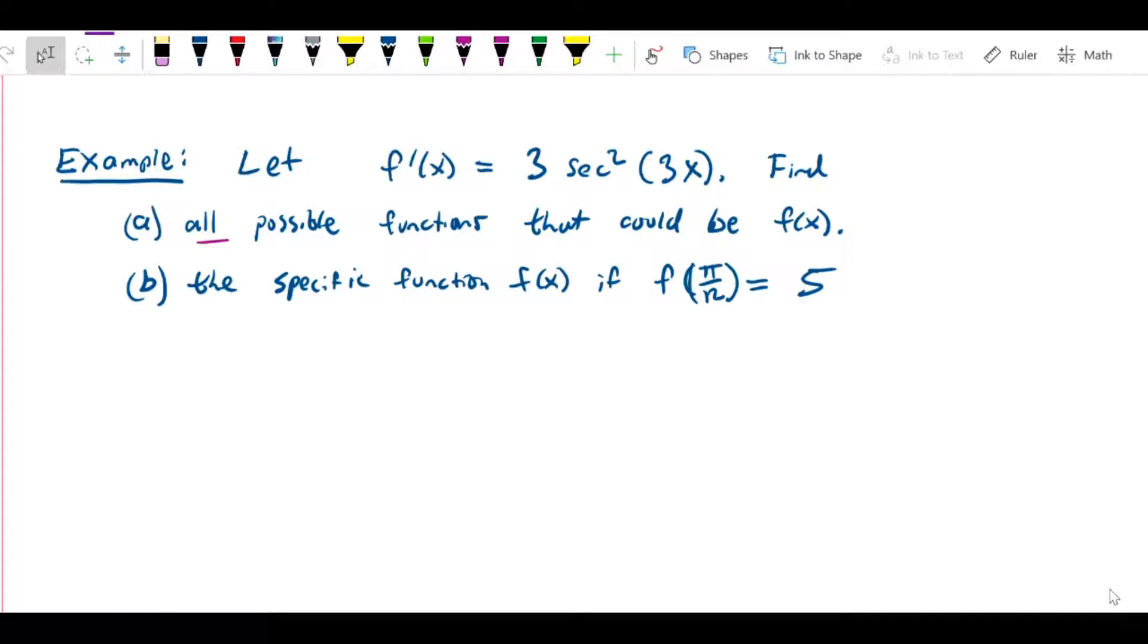First of all, what do we know about the secant squared function? We know that this is the derivative of the tangent function. So even though we'll cover the more analytical technique for finding this later on, hopefully you can recognize that if I set f(x) equal to tan(3x)...